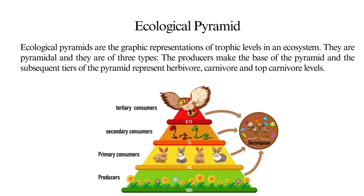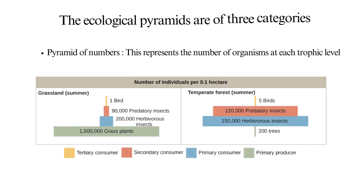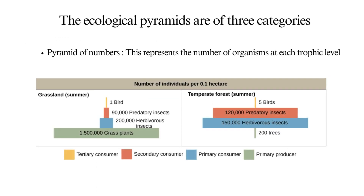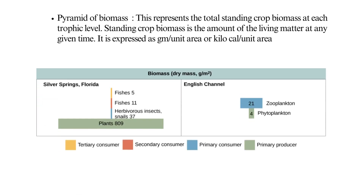Ecological pyramids are the graphic representations of trophic levels in an ecosystem. They are pyramidal and of three types. The producers make the base of the pyramid and the subsequent tiers represent herbivore, carnivore, and top carnivore levels. The ecological pyramids are of three categories: pyramid of numbers — representing the number of organisms at each trophic level; pyramid of biomass — representing the total standing crop biomass at each trophic level.